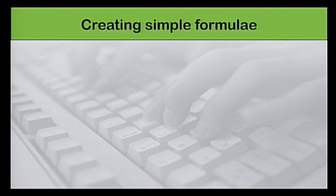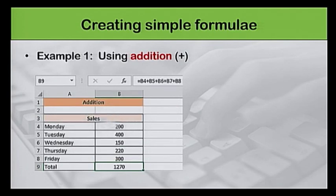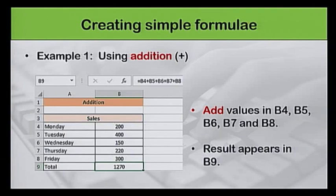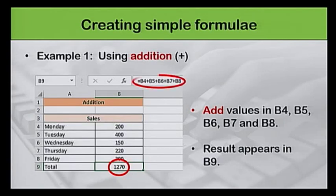You can create simple formulae in Excel. In our first example, we are going to use addition. Here we have to calculate the total sales made during 5 days. Sales values in cells B4, B5, B6, B7, and B8 are added together. The result is then displayed in cell B9. The formula used here is equal to B4 plus B5 plus B6 plus B7 plus B8.